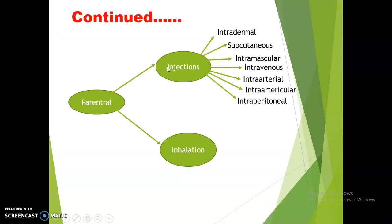The parenteral route is classified into two subclasses: injections, where the drug is injected with the help of a hollow syringe and needle, and inhalation, where the drug is inhaled through the nose and absorbed from the lungs. Depending upon the site of drug injection, injections are subclassified as intradermal, subcutaneous, intramuscular, intravenous, intra-arterial, intra-articular, intraperitoneal, intrathecal, intramedullary, intracardiac, etc.